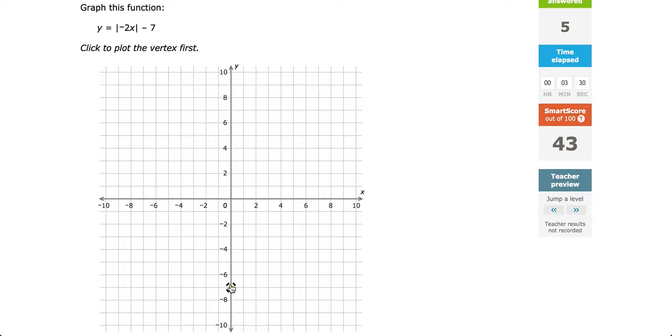You might think that the negative 2 inside would tell us to go down 2, right 1. But because it's inside the absolute value, the negative actually turns into a positive. So we're going to rise 2 and run 1 in this case.